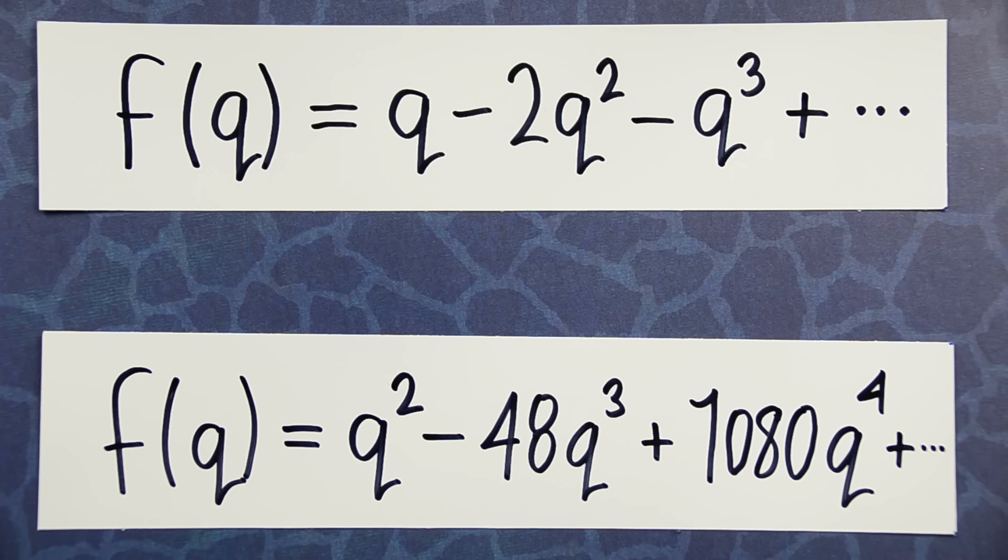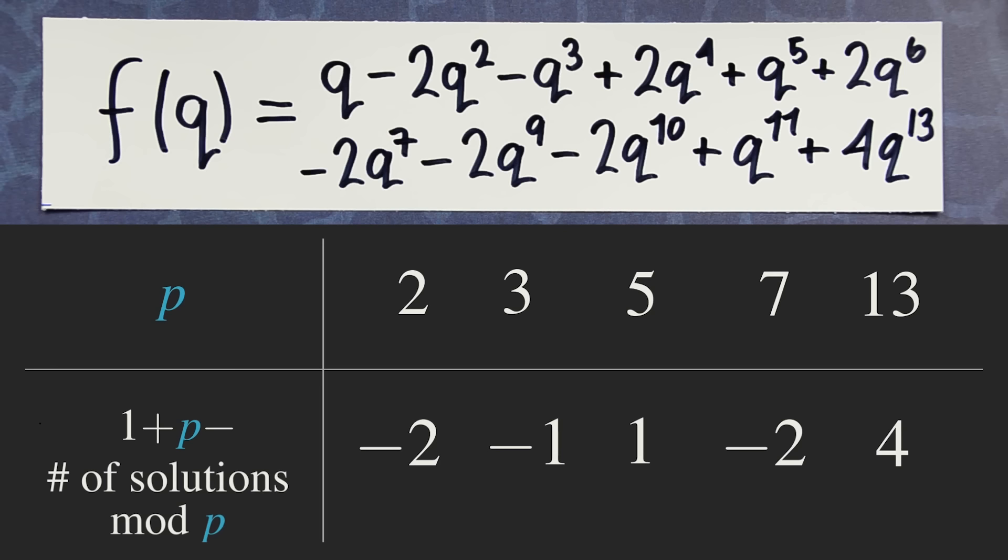We started off the video saying that the coefficients of a modular form have a hidden meaning. We can now see what this is. These coefficients somehow count the number of solutions to an algebraic equation living in an opposite corner of math. They have a strange predictive power.